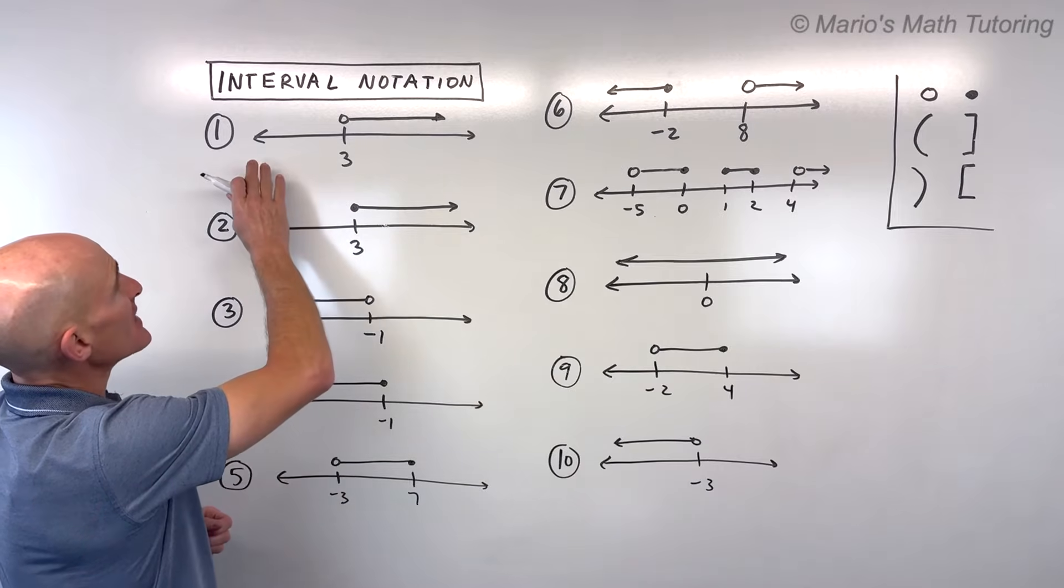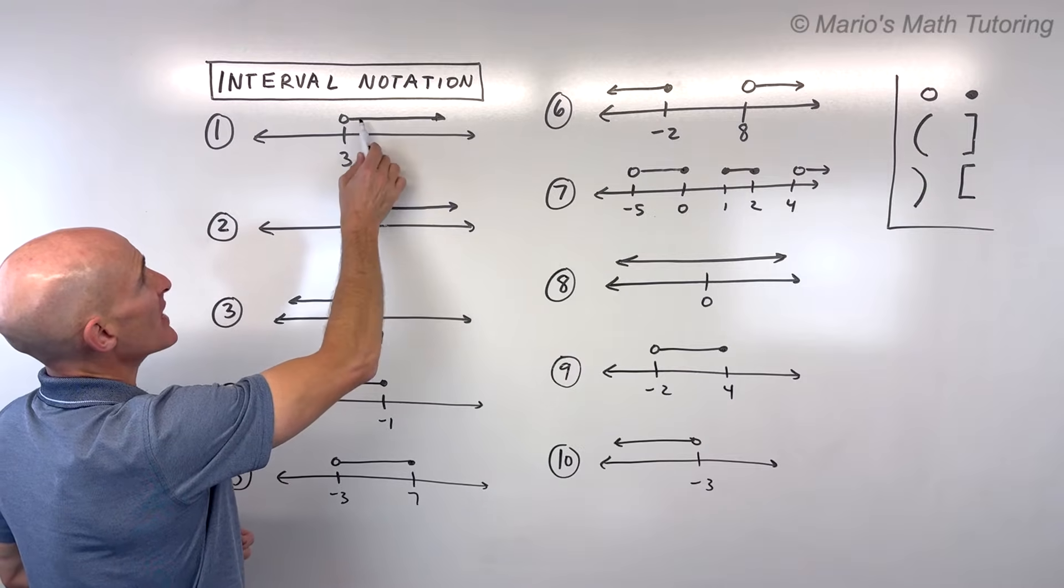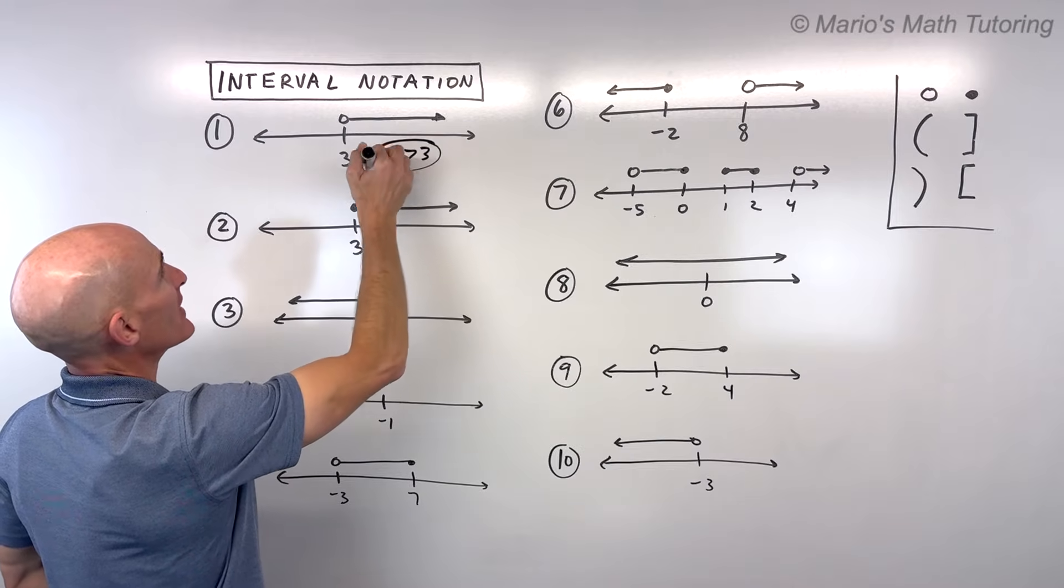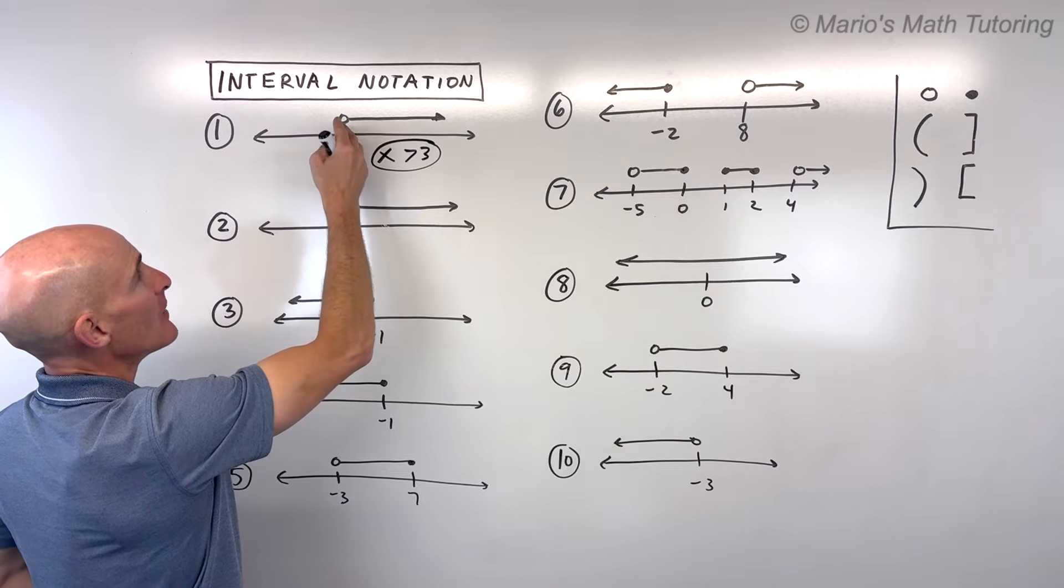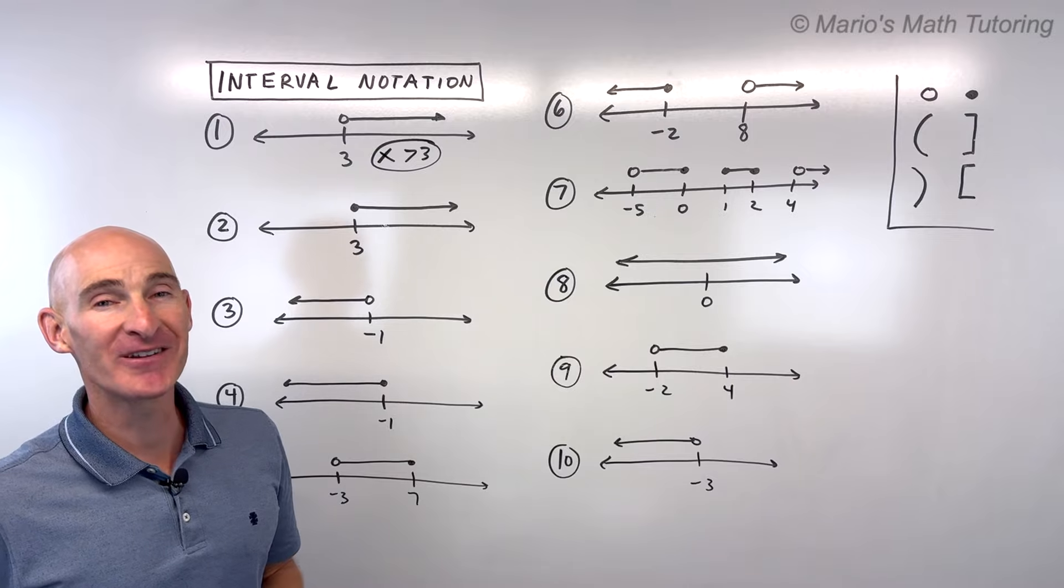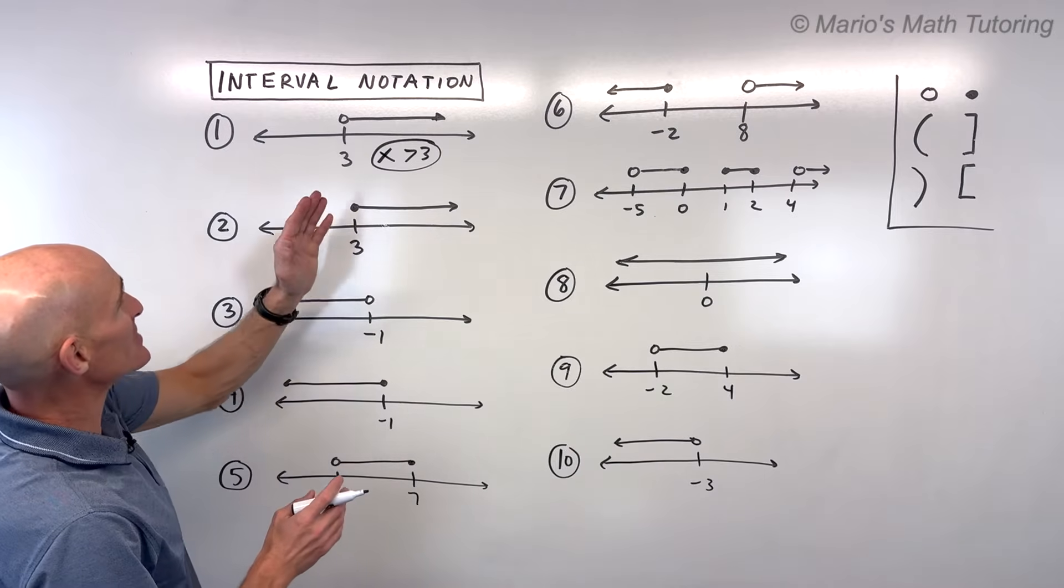For the first example, say this is our solution set x. Normally we would say for this one, x is greater than 3. It doesn't equal 3, it's hollow, it's empty, but it's all the values greater than 3. No more inequalities. Now, interval notation steps in.